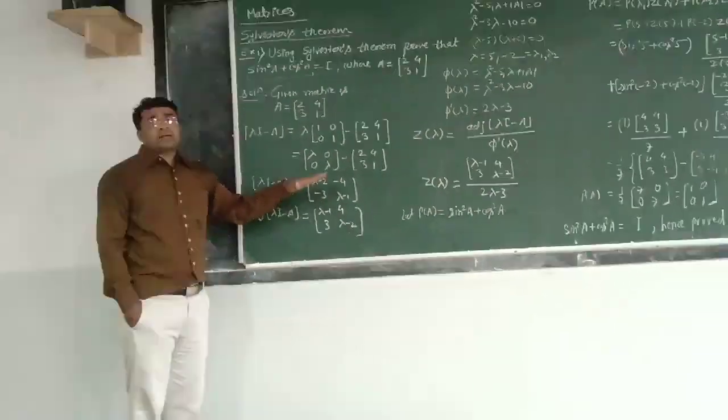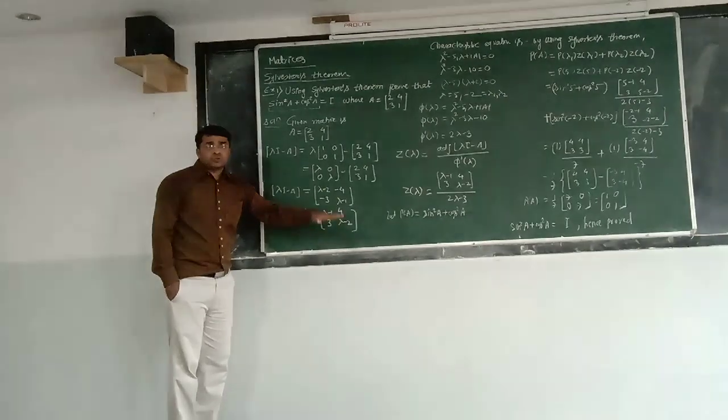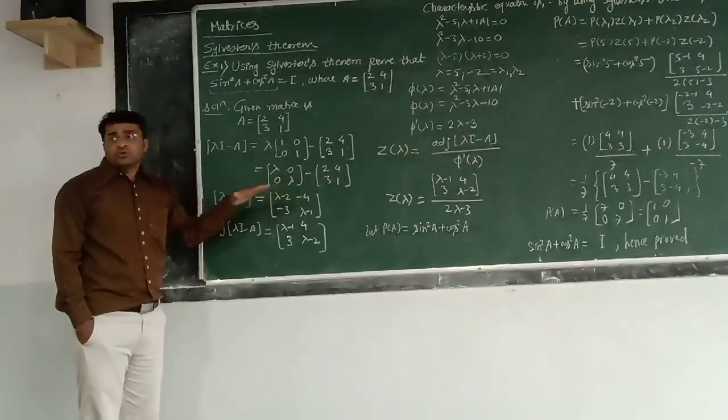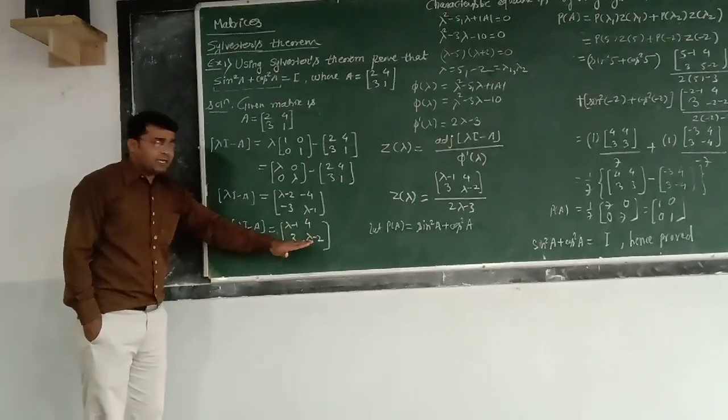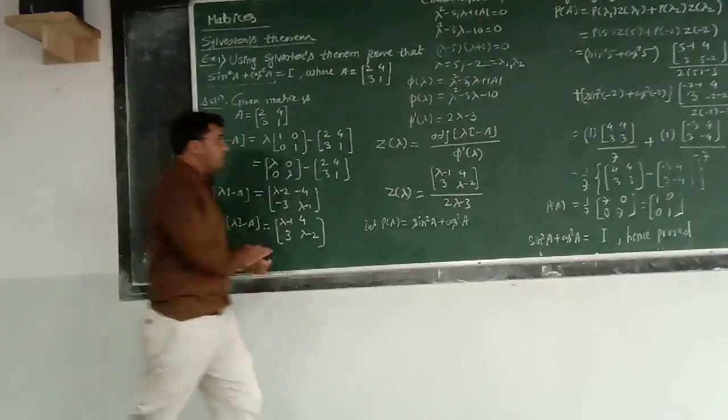For 3 by 3, you have to find the cofactor matrix, then take its transpose. That gives the adjoint. But now, here, we are dealing with the 2 by 2 matrix. So it can be obtained directly.